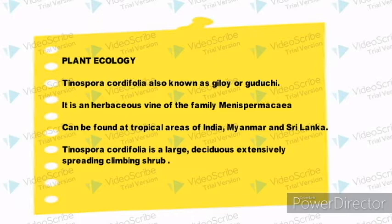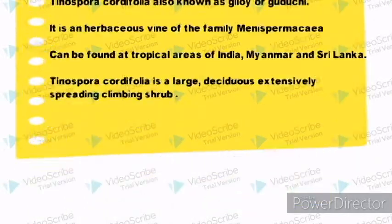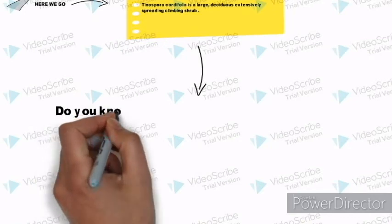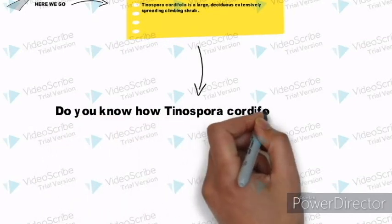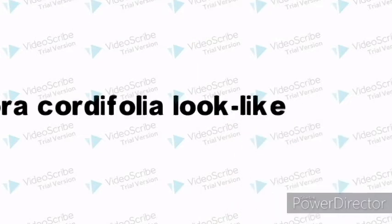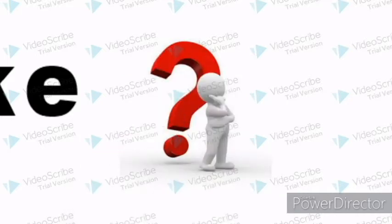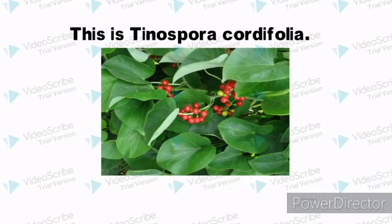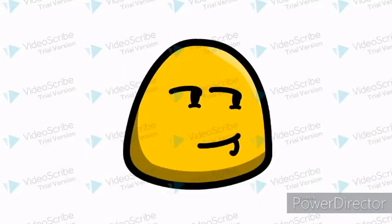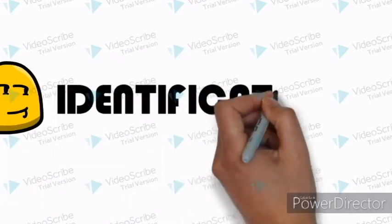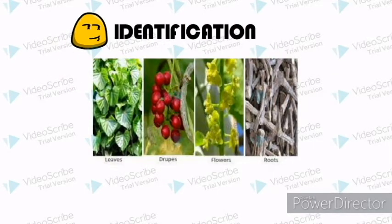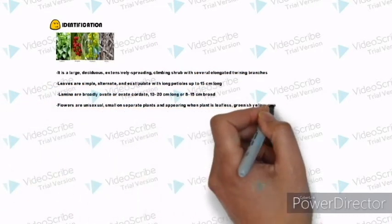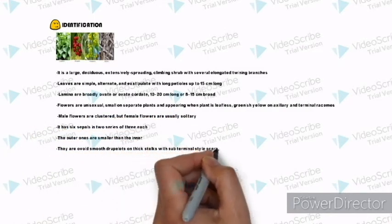Tinospora cordifolia is a large, deciduous, extensively spreading climbing shrub with several elongated twining branches.